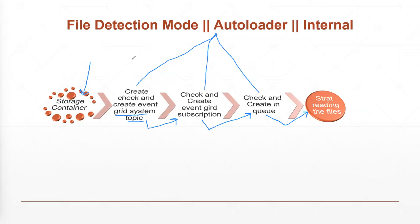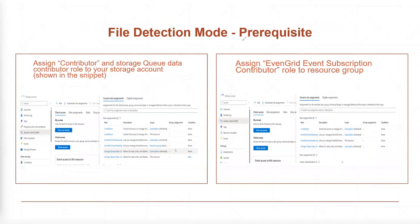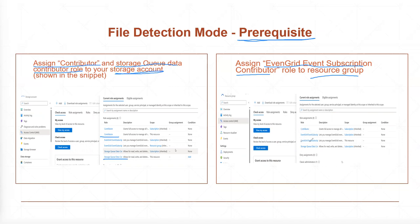Here we are talking about the prerequisites for auto loader in file detection mode. First, you have to assign a Contributor role and a Storage Queue Data Contributor role to your storage location — maybe your ADLS or blob storage. Once you assign that role, the next prerequisite is you need to assign the Event Grid Event Subscription Contributor role to the resource group. Make sure you are assigning these roles appropriately — one on your storage account and one on your resource group.